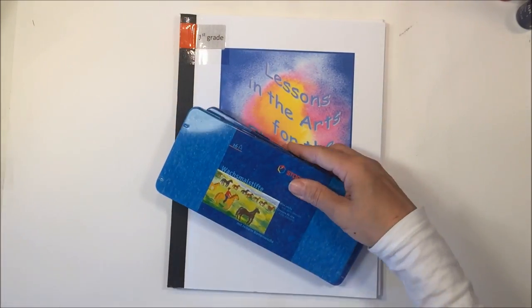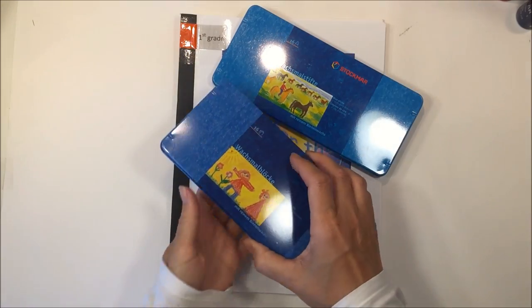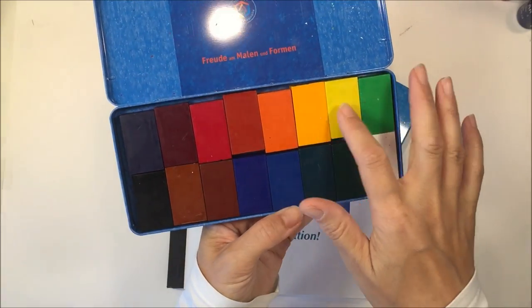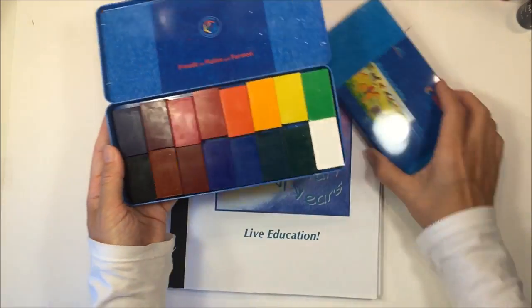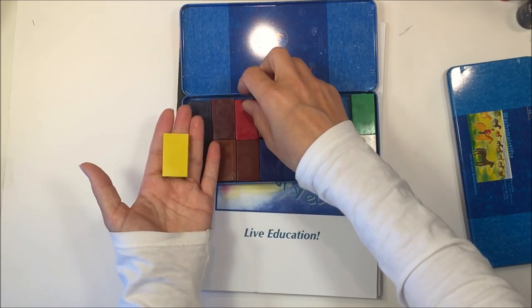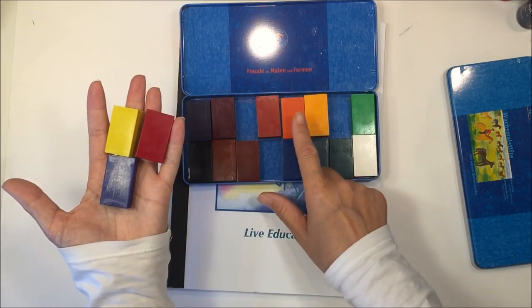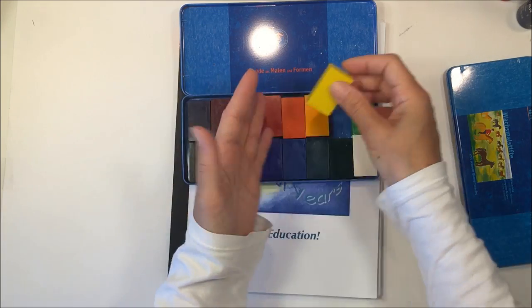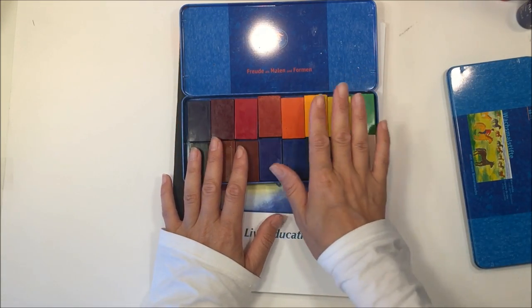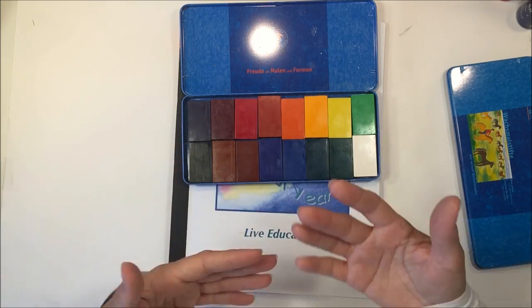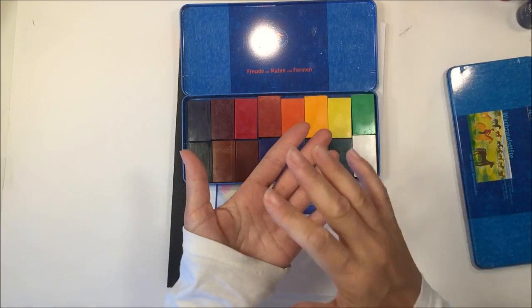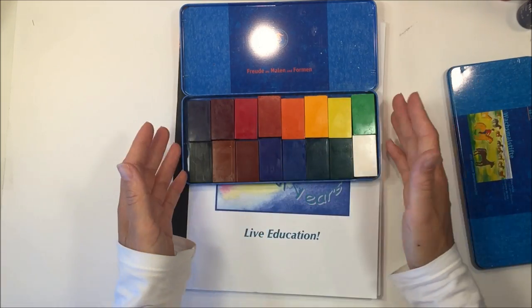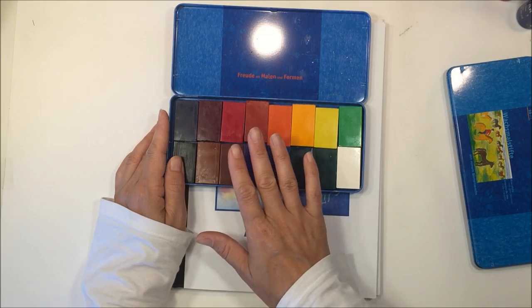I want to show you the crayons and the watercolors that are typically used in first grade. The first set are the block crayons. This set comes with 16 colors, but typically in first grade you're only going to be using the primary colors and maybe the secondary colors. That way you can start to form your own colors, your own secondary and tertiary colors on your own by mixing these colors together. These are beeswax crayons. They layer really beautifully. You just don't want to be really heavy handed when you're layering the first time.